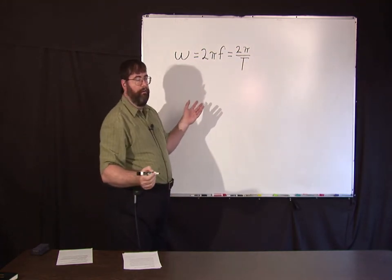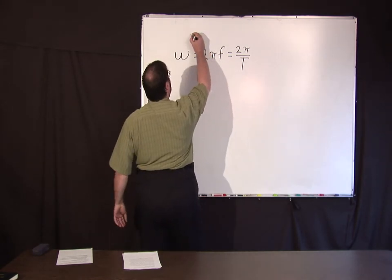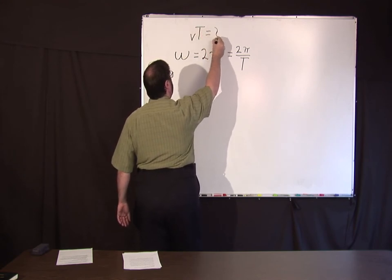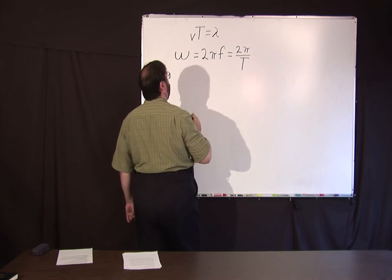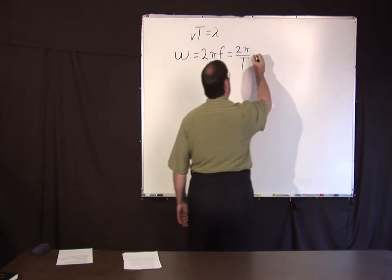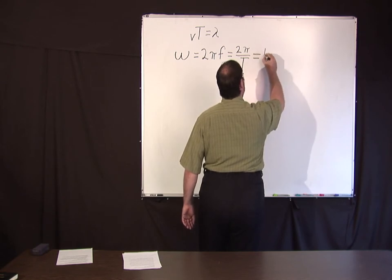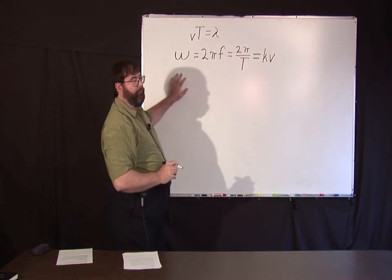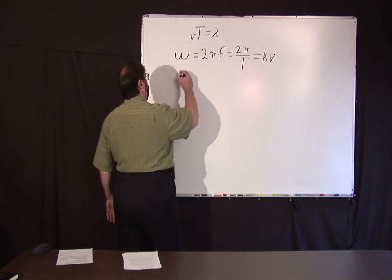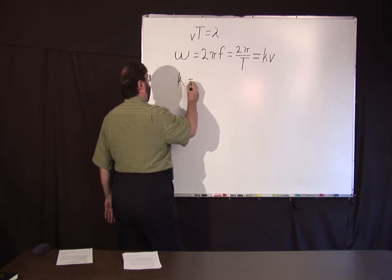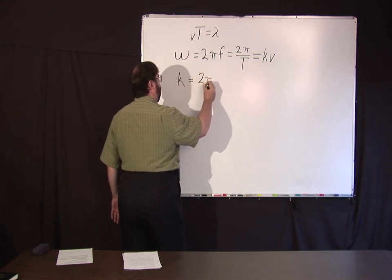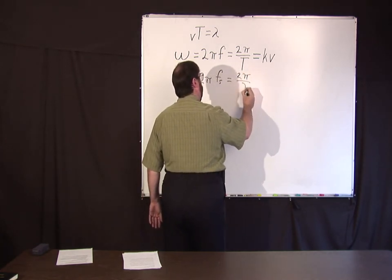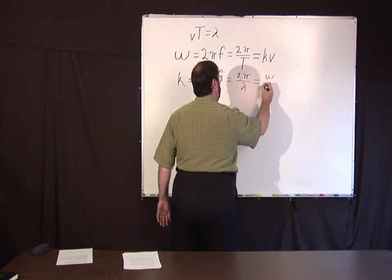But we already know for wave phenomena from last week that the velocity times the period is equal to the wavelength. From that you can conclude that omega is also equal to kv, and from spatial relationships k equals 2 pi times the spatial frequency, which equals 2 pi over lambda equals omega over v.